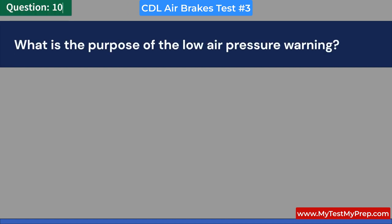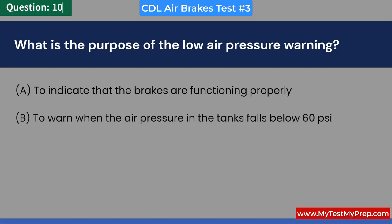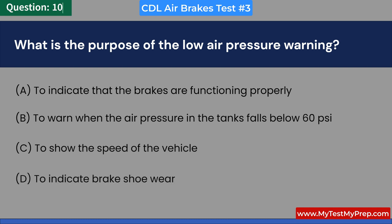What is the purpose of the low air pressure warning? A. To indicate that the brakes are functioning properly. B. To warn when the air pressure in the tanks falls below 60 PSI. C. To show the speed of the vehicle. D. To indicate brake shoe wear. Answer: B. To warn when the air pressure in the tanks falls below 60 PSI.